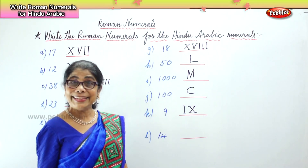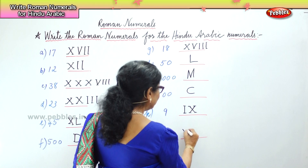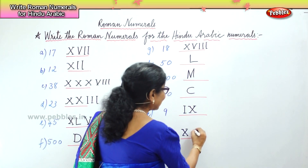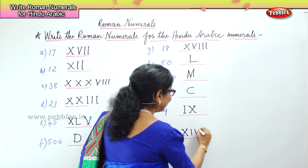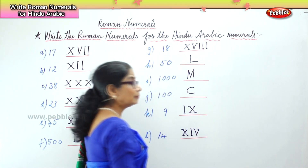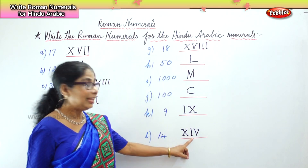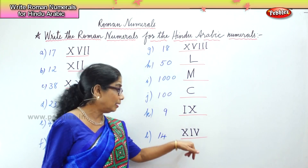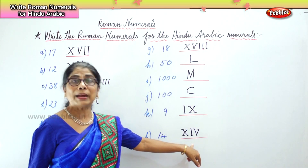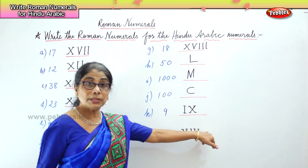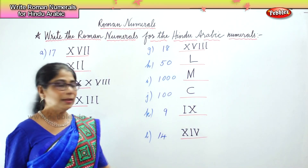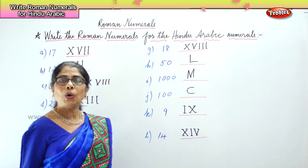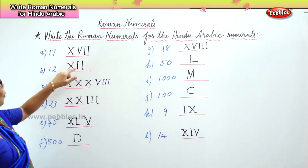Now you have 14. You know 10. Then you write 1 and 5. The rule says: if any numeral comes between 2 greater numerals — you have 10 here, you have 5 here — then the smaller numeral that is in between, closer to the next numeral, must minus. So you have 10 and you minus from 5 one: 14. So we call this 14.